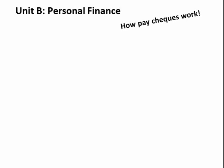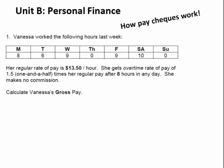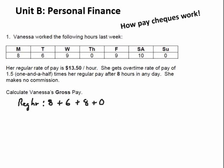Unit B is personal finance — that's how your paycheck works. When you get paid, how much do you get to keep? Here's a typical example: Vanessa worked the following hours — Monday 8, Tuesday 6, Wednesday 9, Thursday off, Friday 8, Saturday. Her regular pay is $13.50 every hour. She gets overtime — that's the extra premium pay when you work more than 8 hours in a day. Let's calculate her pay, because we'll be doing lots of this in Unit B.